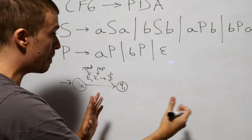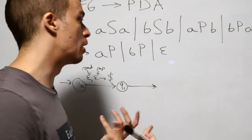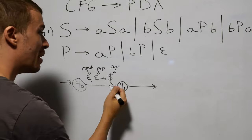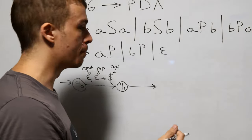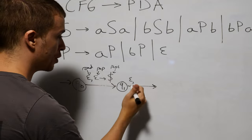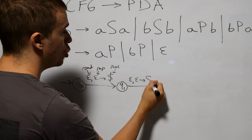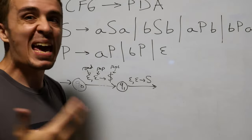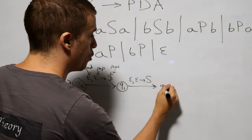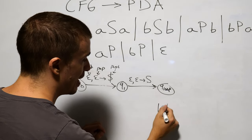Now let's get into the meat of the business and start the derivation. Every derivation starts with the start variable. So I'm going to do exactly the same thing — read nothing, pop nothing — but push the start variable of the grammar, which happens to be S in this case. Whatever the start variable's name is, that's what goes here. And then I go to a state I'll call Q-loop. At this point, we have the dollar sign at the bottom and S at the top.